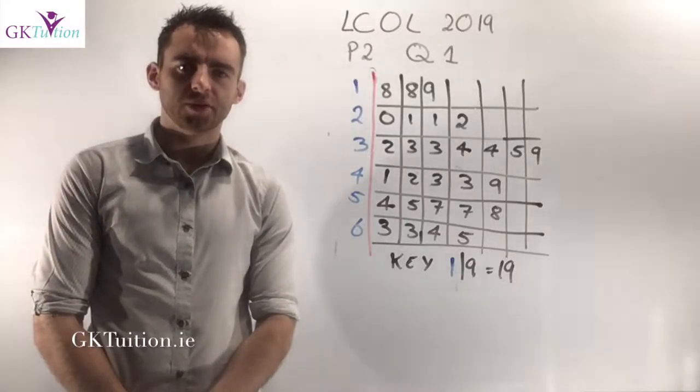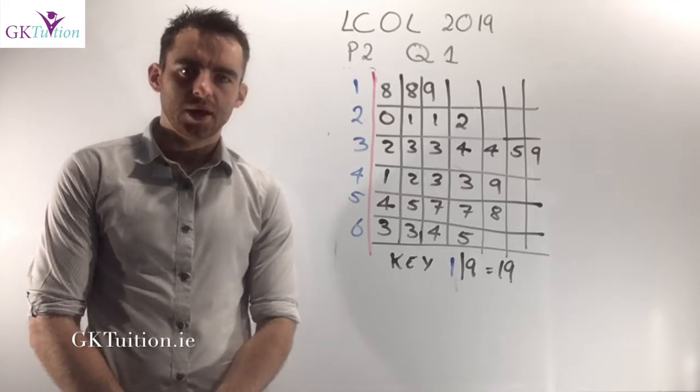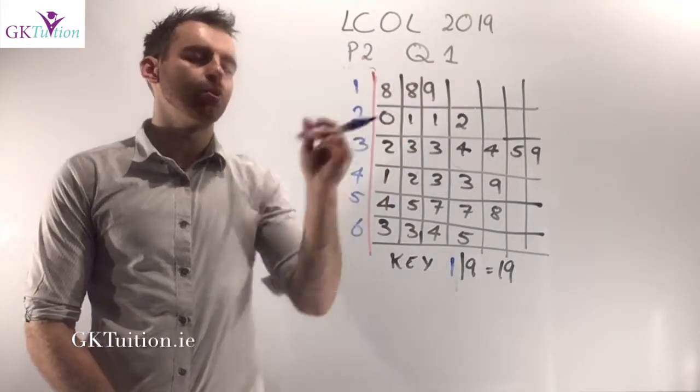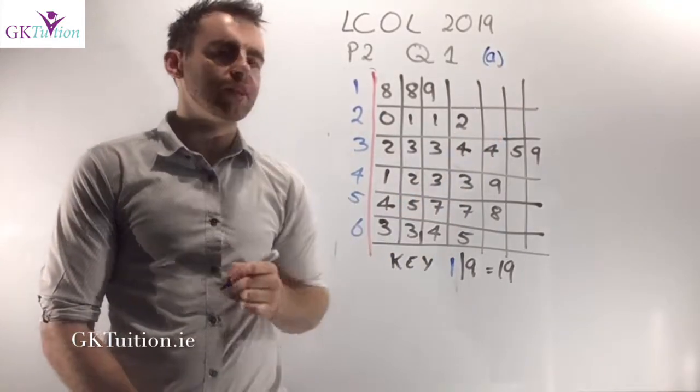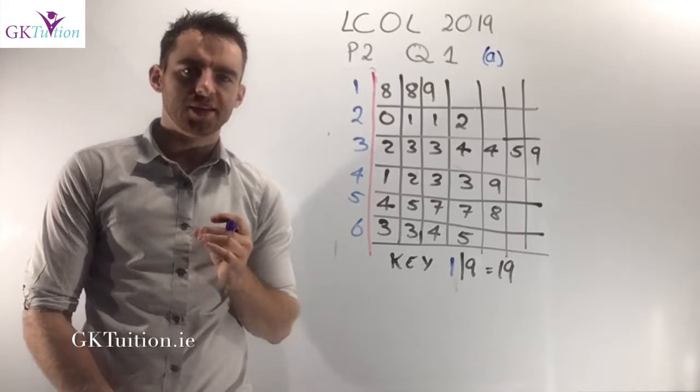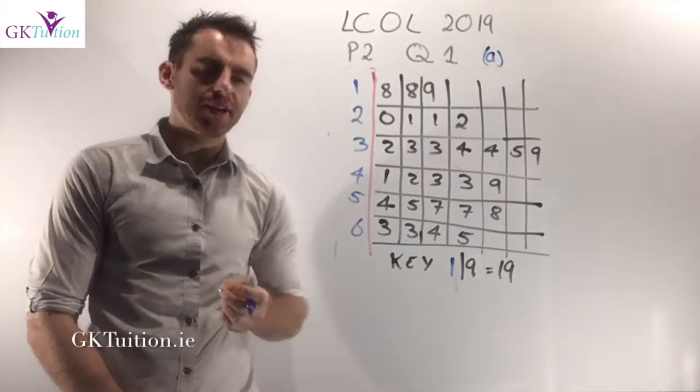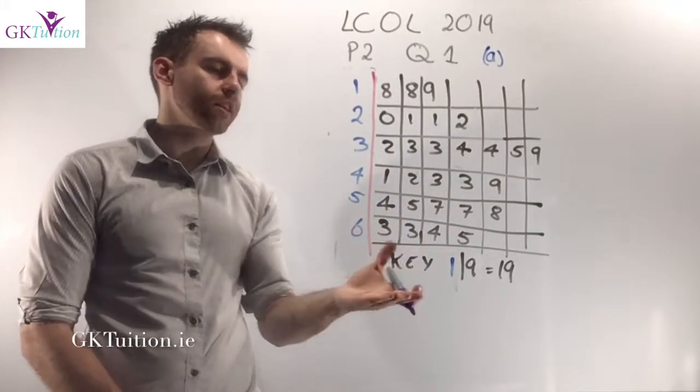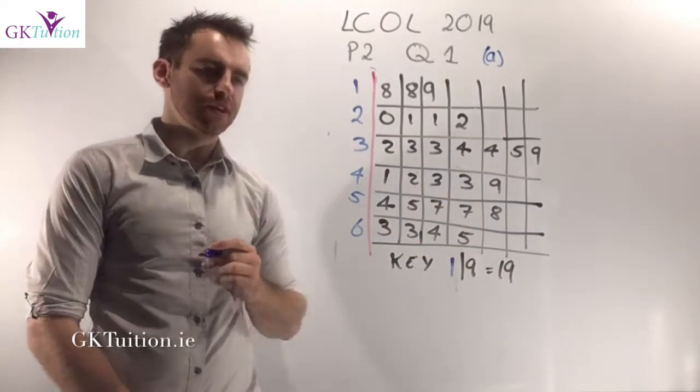Hi, I'm Paul Kilgan from GK Tuition and in this video I want to talk to you about probability. Now the question I've chosen to go through here is 2019 paper 2 question 1. In the first part of this question we're given the age in years of 28 employees in a company and we're asked to complete a stem and leaf graph to fill in all of their ages. So you should notice that they've mentioned the key here, like for example if you have a 1 and then a 9 that refers to 19.